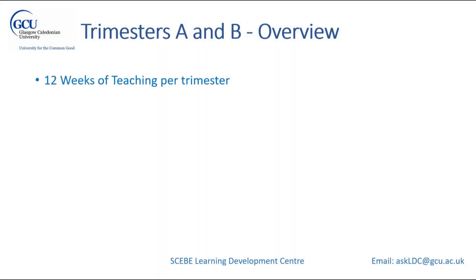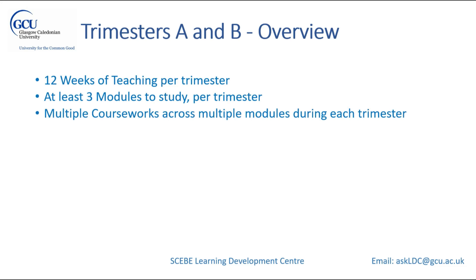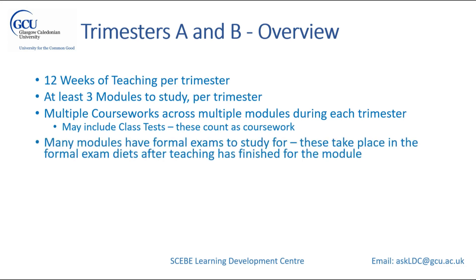Trimesters A and B have 12 weeks of teaching per trimester, with at least three modules to study per trimester. Typically it's 60 credits worth of modules — that could be three 20-credit modules or a couple of 20-credit modules and a number of 10-credit modules. You're going to be busy. Across three modules there'll be multiple courseworks across multiple modules during each trimester. Remember courseworks also include class tests — something that feels like an exam but takes place during the 12 weeks of teaching. Many modules do have formal exams, which take place in the formal exam diets after teaching is finished.